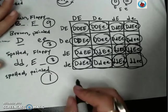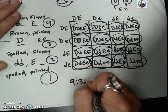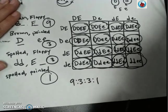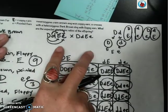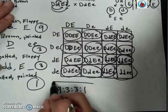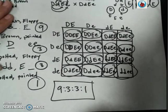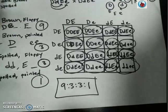So when I look at this ratio, when you cross two dihybrids, so a hybrid for both traits, you always get a 9 to 3 to 3 to 1 phenotypic ratio. This is your expected every time.